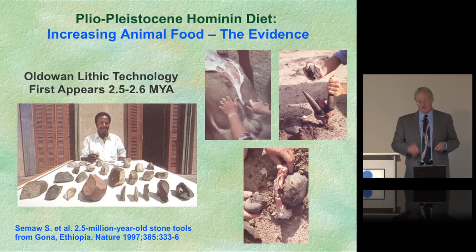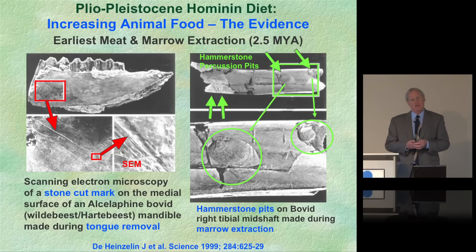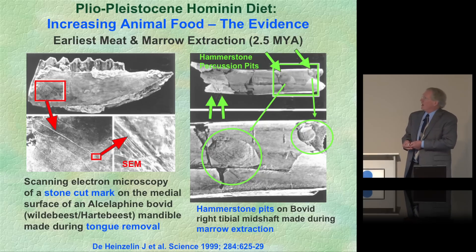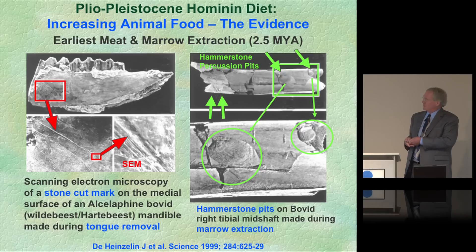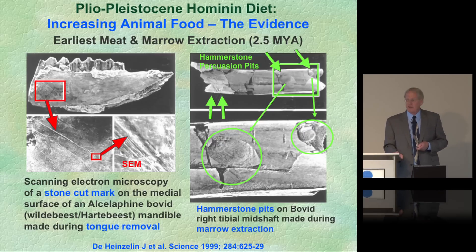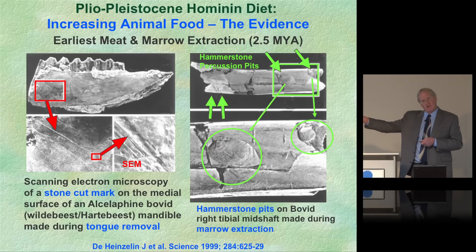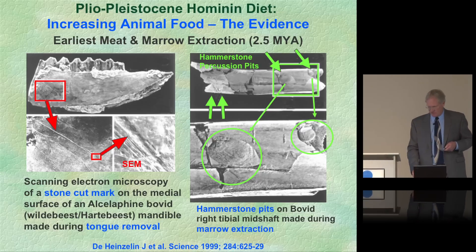This is one of the coolest fossils ever found — the jawbone of a hartebeest or wildebeest with a characteristic cut mark. Scanning electron microscopy confirms it is not a gnaw mark from a carnivore. It's on the medial, inner side of the jawbone — they were after the tongue. Work from our laboratory shows the tongue is actually a high source of monounsaturated fats, and marrow similarly is very high in monounsaturated, cardiovascularly healthy fats.